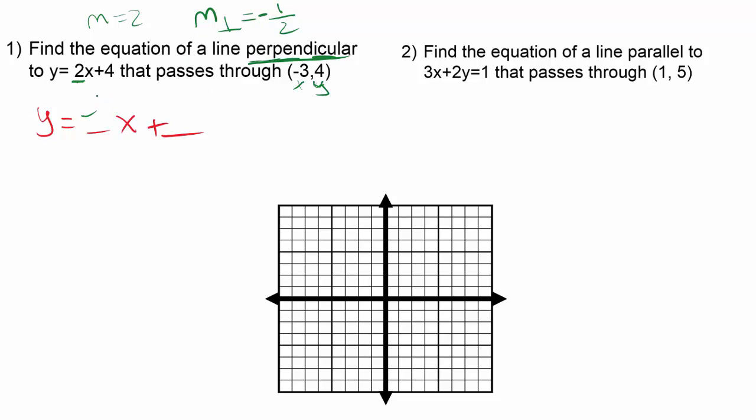So I'm just going to fill that in. My new line must have a slope of negative 1 half, since it's perpendicular to this line y equals 2x plus 4.